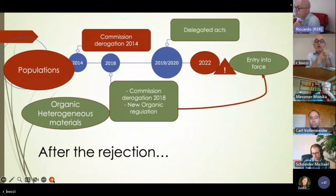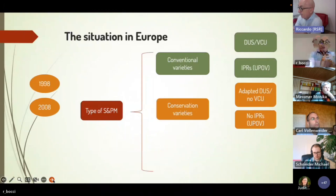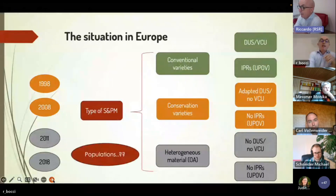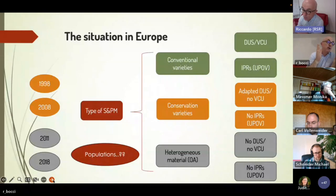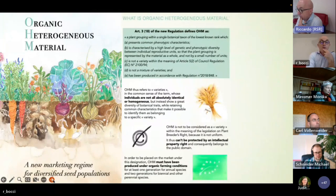The other topic that was maintained at the European level was organic heterogeneous material, included not within the seed marketing framework but within the new organic regulation. So the idea of diversity was developed through two different parallel paths. Currently in Europe we have conservation varieties and heterogeneous materials, but after the experimental phase for populations ended, there is no specific place for the populations developed during that phase. In Italy, for example, we are still using the derogation to market populations registered during the experimental phase, but we are not allowed to add new ones.